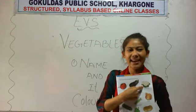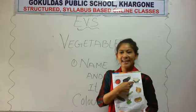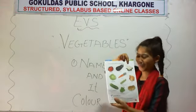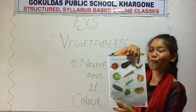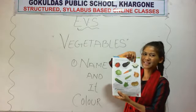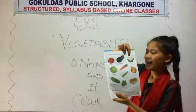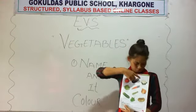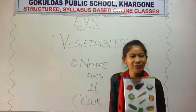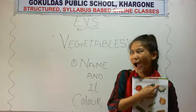Now what is this? This is vegetable. Can you name this vegetable? Which vegetable is this? This is cauliflower. And what is the color of cauliflower? Green and white.